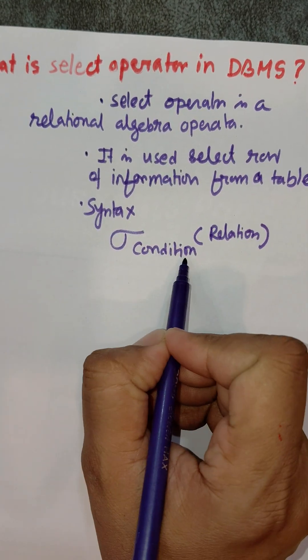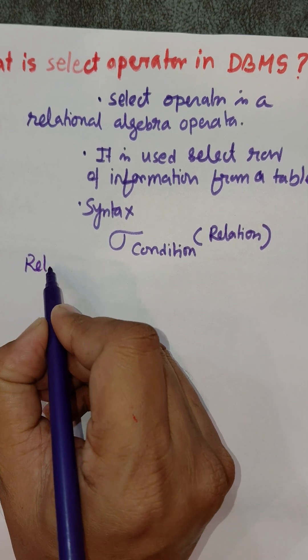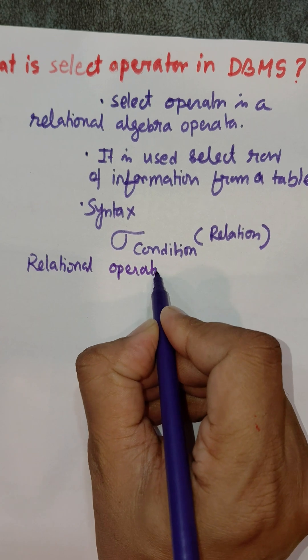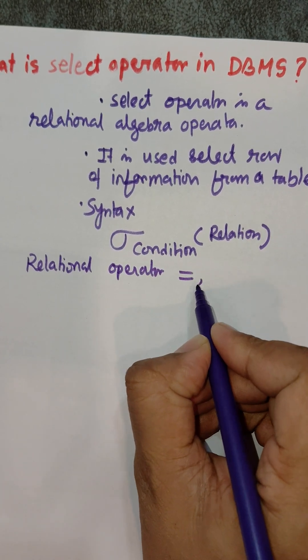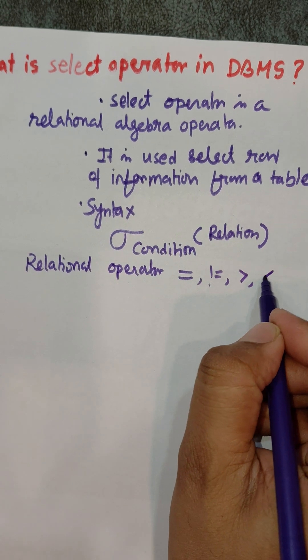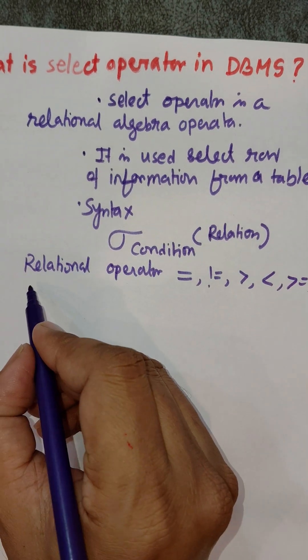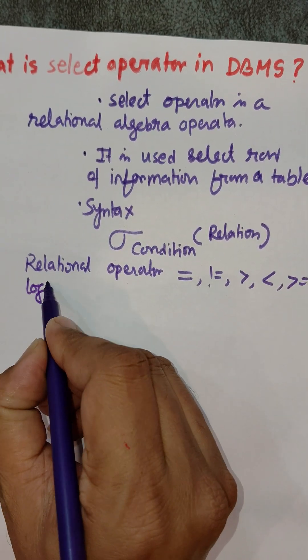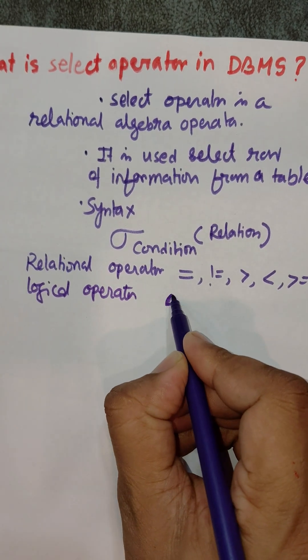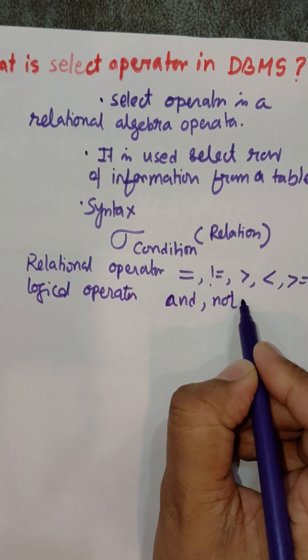We can use relational operators such as equal to, not equal to, greater than, less than, greater than or equal to, less than or equal to, and logical operators like AND, OR, NOT.